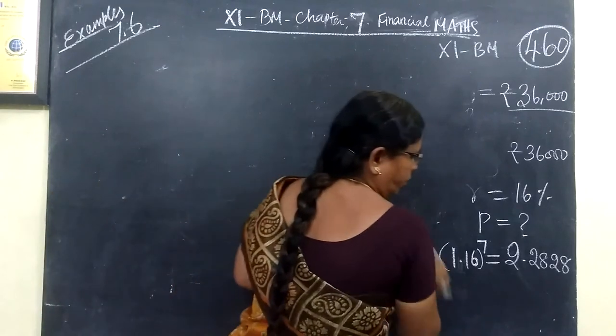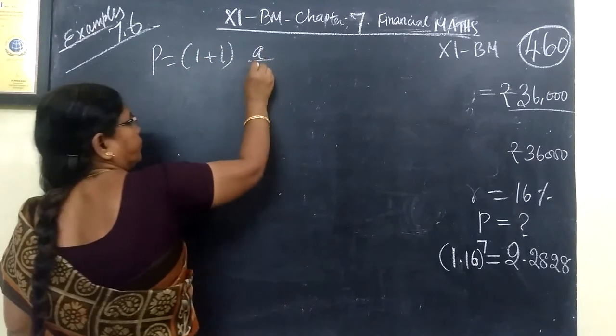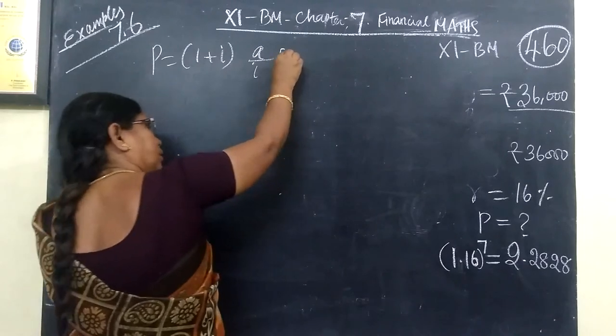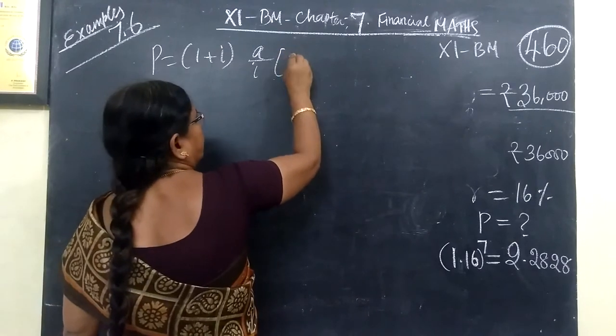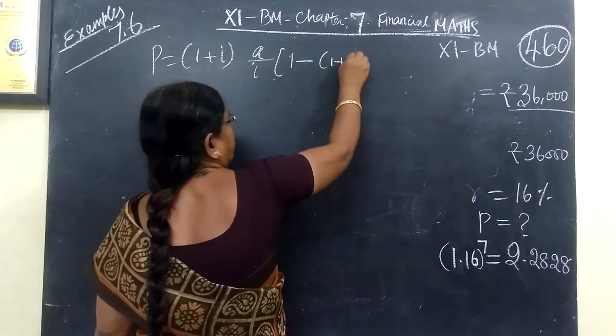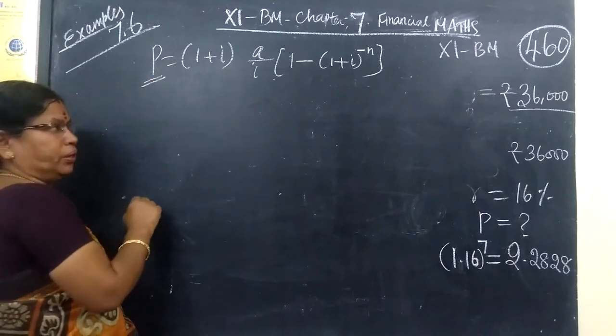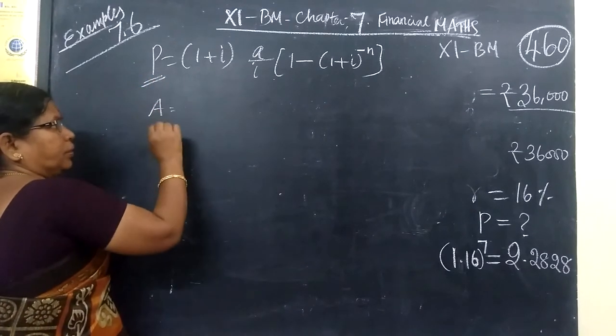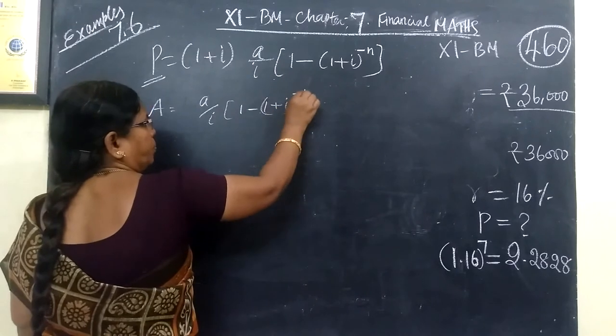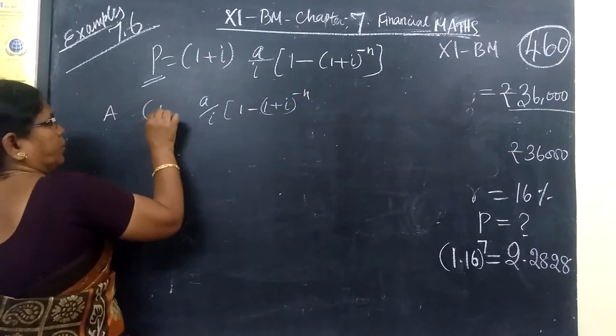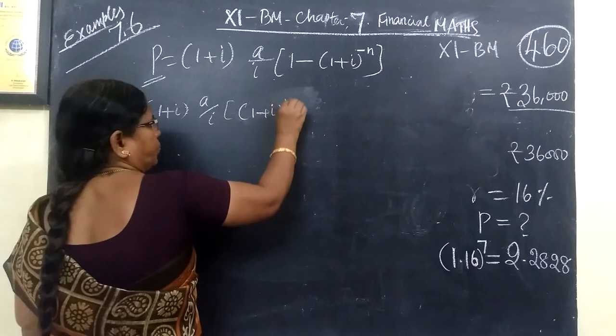So P is equal to 1 plus i, then A by i, then 1 minus (1 plus i) to the power minus n. This is the P formula. Suppose it is A by i, then (1 plus i) to the power minus n. This is (1 plus i) to the power n minus 1.